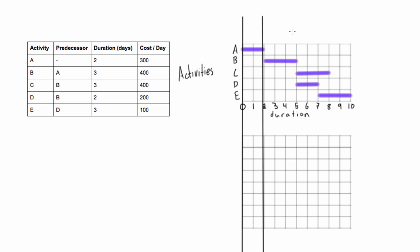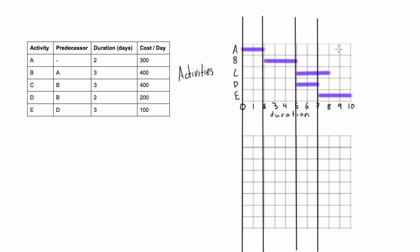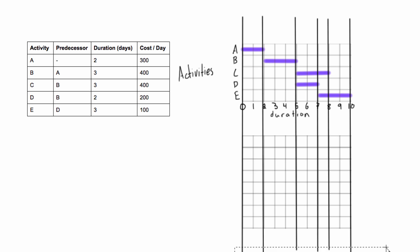The next time any activity starts or ends is at the end of the fifth day, so we draw that line straight down. This method works really well on paper too — just make sure to stack your graphs. The next division is at day 7, where activity D ends and activity E starts. That period is only one day long, and then at the very end of the project we have the end of the last period.